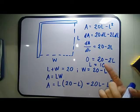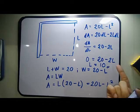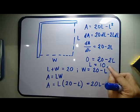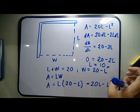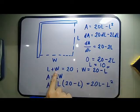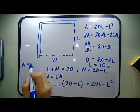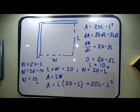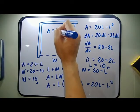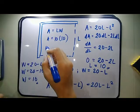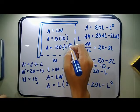We are given only one critical point, so there is no need for testing. If you have two or more critical points, you would need to test for maxima and minima. With length equal to 10, width equals 20 minus 10, so width is also 10. Therefore, the maximum area equals length times width, which is 10 times 10 feet, giving a maximum area of 100 square feet.